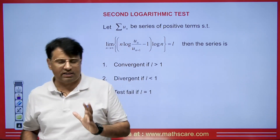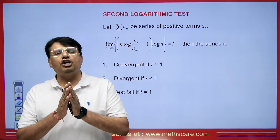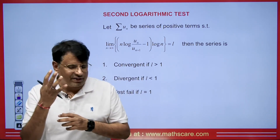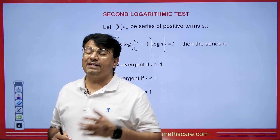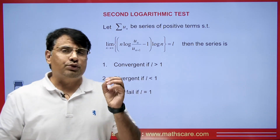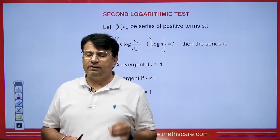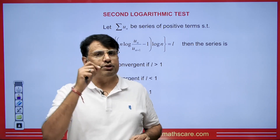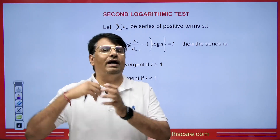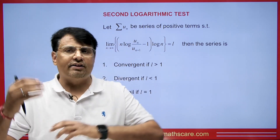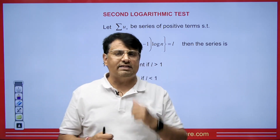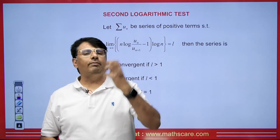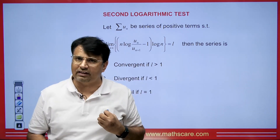I started teaching about the infinite series, where I explained many tests to check when a series is convergent and when a series is divergent. I mentioned the D'Alembert ratio test — when the D'Alembert ratio test fails, we either use the Raabe test or we apply the logarithmic test. In the last class, I told you about the logarithmic test and when it is used.